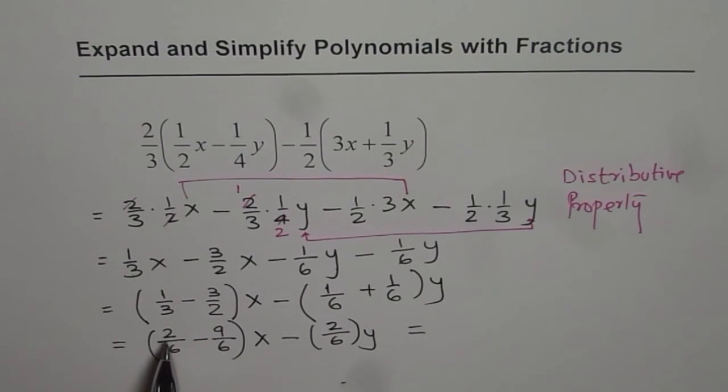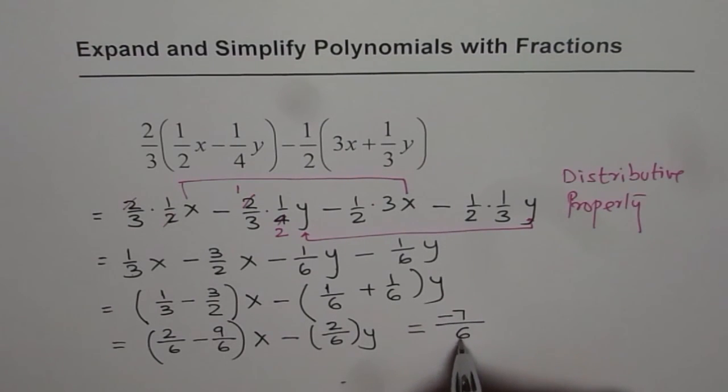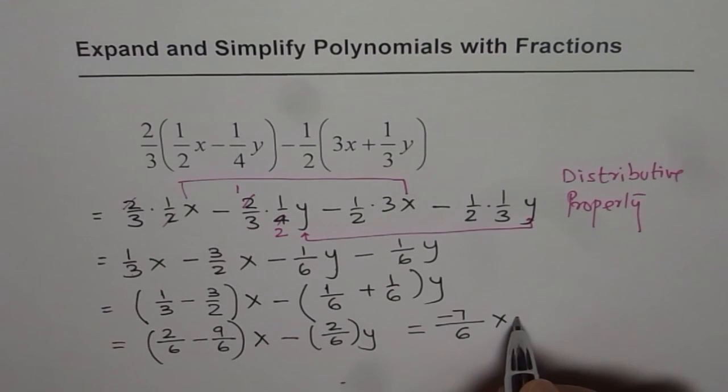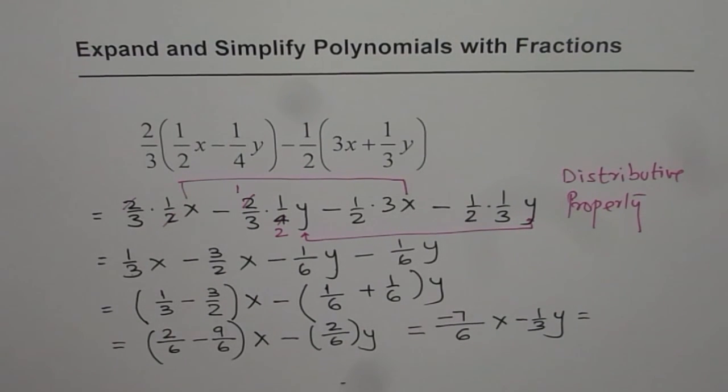Now let's do it. 2 minus 9 is minus 7, so we get minus 7 over 6x, and 2 over 6 can be simplified. We can write this as minus 1 over 3y.